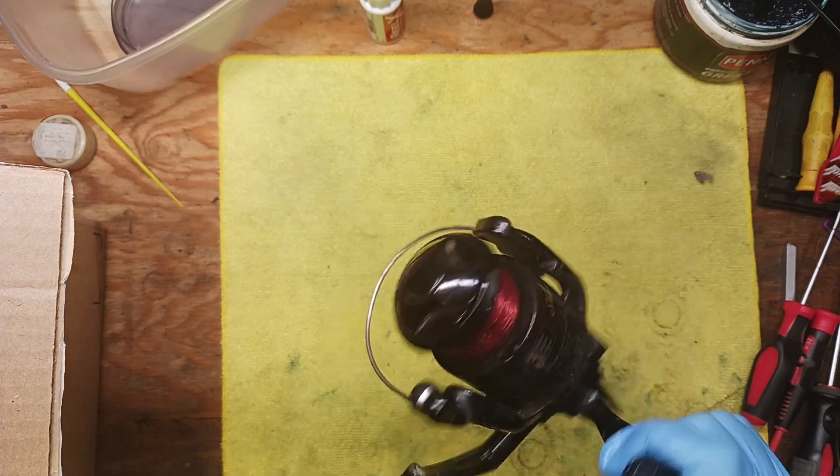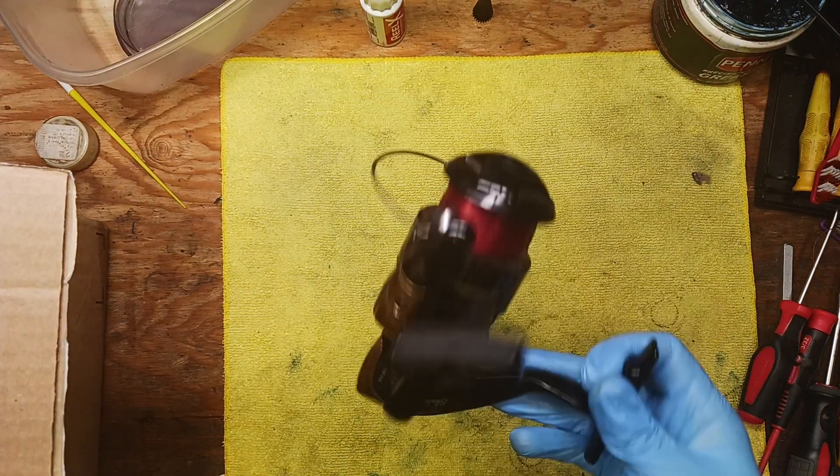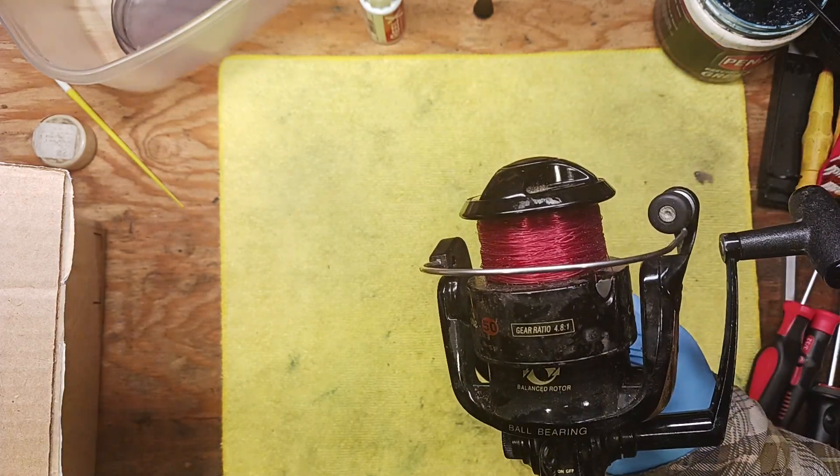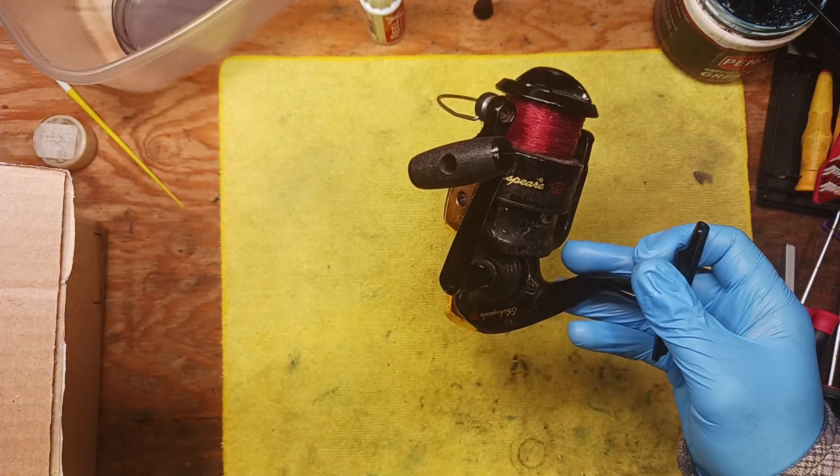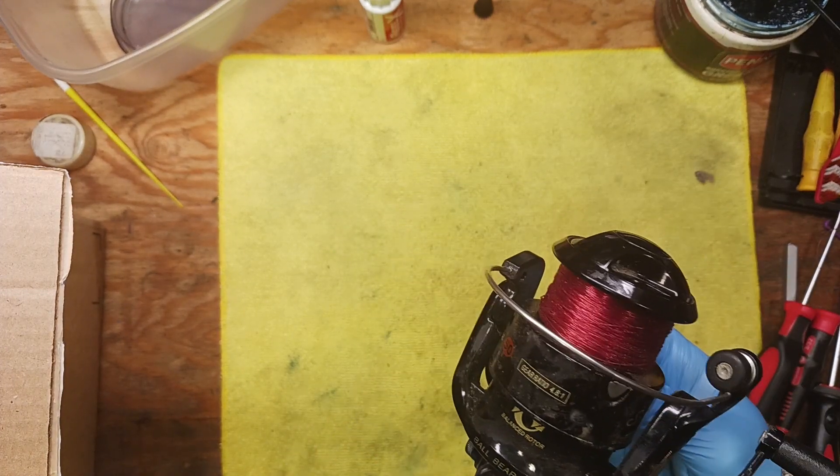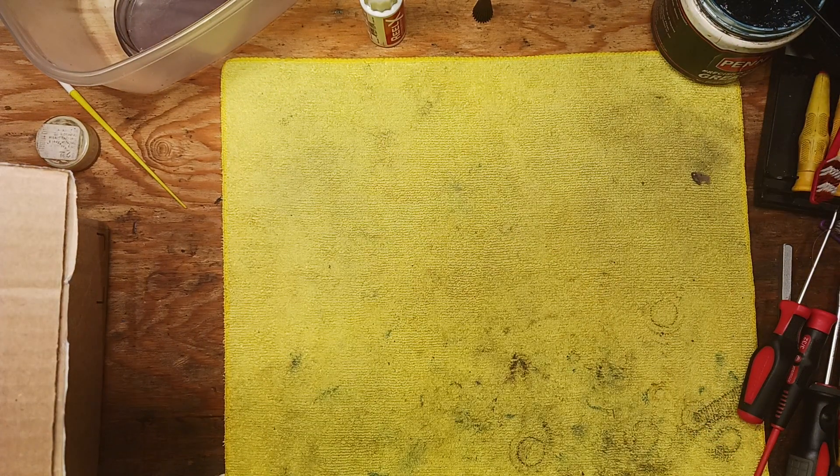This probably was attached to an ugly stick or something like that. This is very similar, these reels, to the Alpha models that Shakespeare had for quite a number of years, made from light plastics and graphites and components.